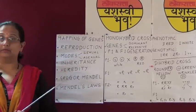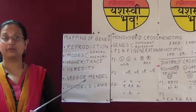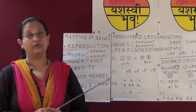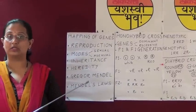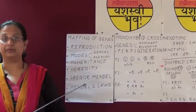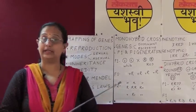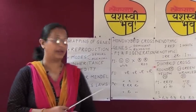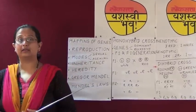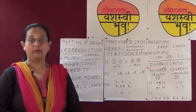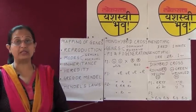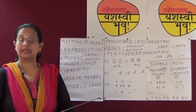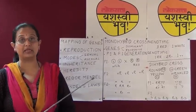Gregor Mendel was a scientist who performed a lot of experiments with specimens and formulated laws to study heredity. These laws were later named after him as Mendelism. Gregor Mendel is called the father of genetics. Mendel's experiments were based on plants like garden peas — he selected garden peas, that is Pisum sativum, and performed a lot of experiments.